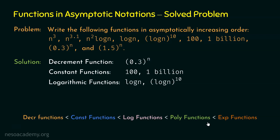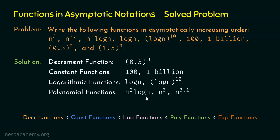For polynomial functions, n² log n qualifies because n² is the dominating term. n^3.1 is also polynomial since it fits the form n^k where k = 3.1, a constant. n³ is also polynomial. So we have three polynomial functions: n² log n, n³, and n^3.1.